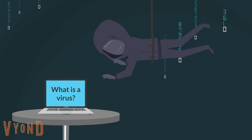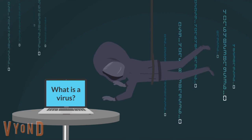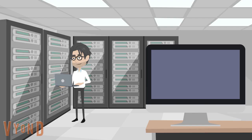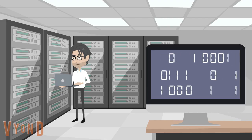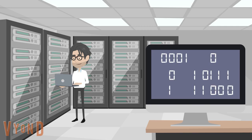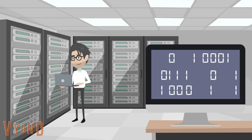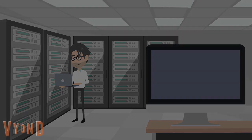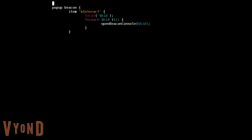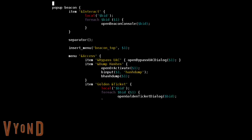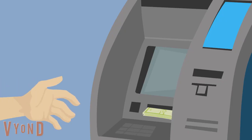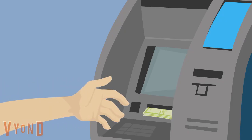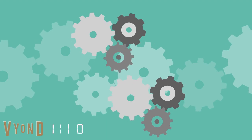What is a virus? All computer programs are essentially a series of zeros and ones, otherwise known as binary code, which, as they increase in scale and complexity, build up bits of information. Bits of information combine to form instructions for computers to perform specific tasks.